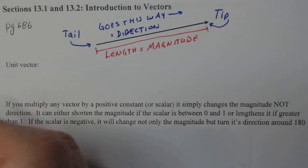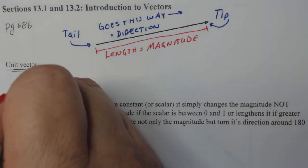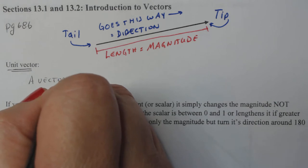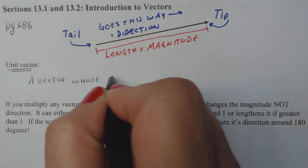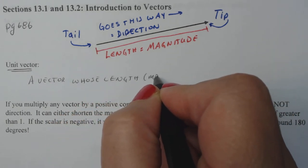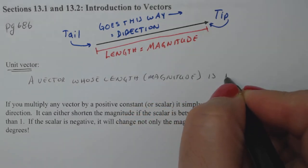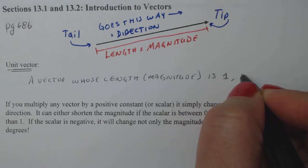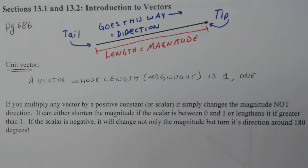Now a unit vector. These are really, really important to your future, namely when we start doing directional derivatives. So a unit vector is a vector whose length or better magnitude is one. So whenever we talk about a unit vector, that unit vector, that vector must be length one.